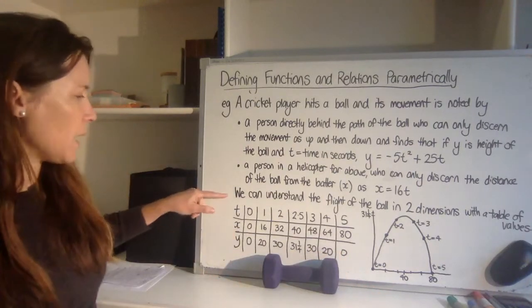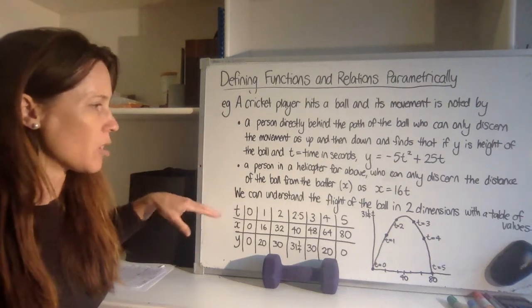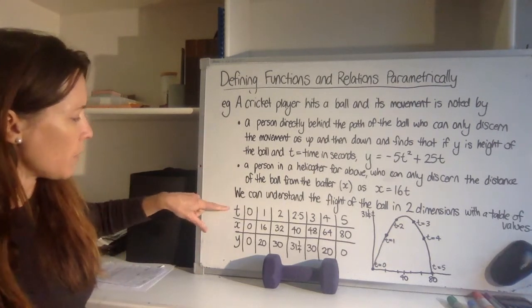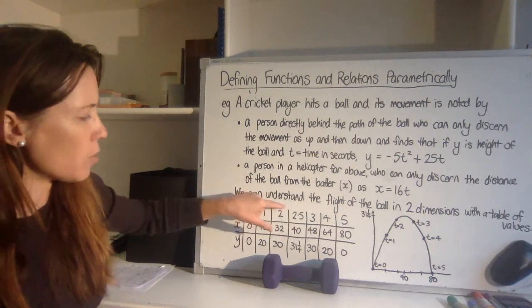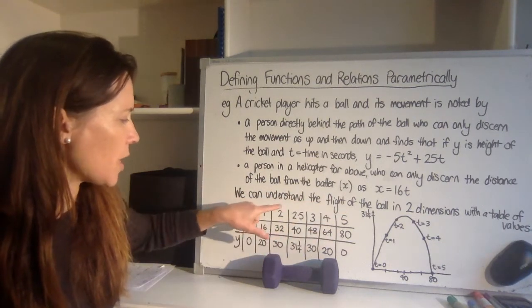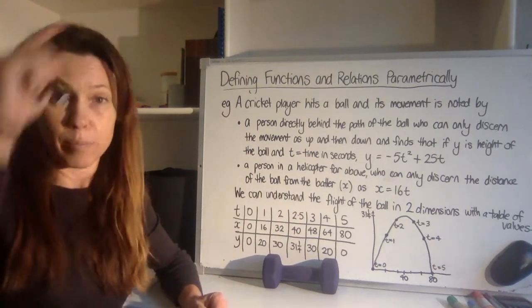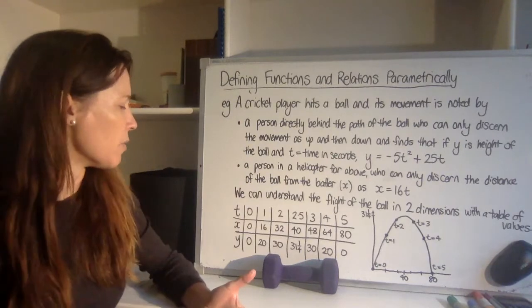All right, so we can understand the flight of this ball in two dimensions now instead of just one dimension and the other dimension with a table of values. So if we list the values of t that we're interested in, and you'll see that I've gone up to 5, and I've looked at what's happening each second, but I've also put in a column there for two and a half because I've reasoned that that's when the ball is at its highest point. So that's a point of interest.